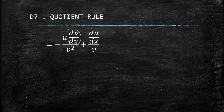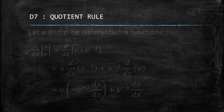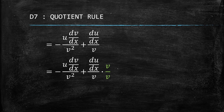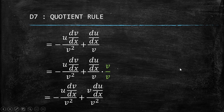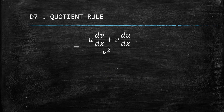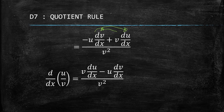We now have the two terms, and we need to combine them by finding the LCD. Multiplying v in the first term gives v du/dx all over v squared. Since they have the same denominator, we can combine them. Interchanging the position of the first and second terms, we already have the formula itself: v du minus u dv all over v squared. We're done proving.